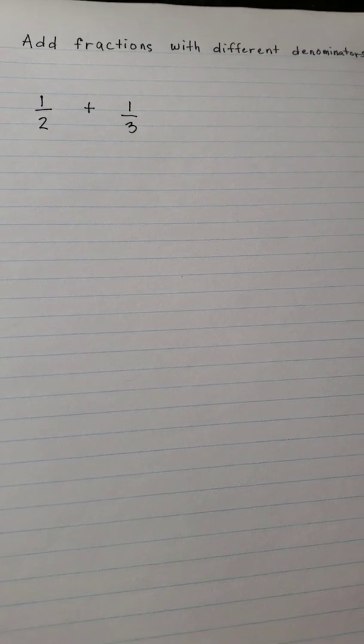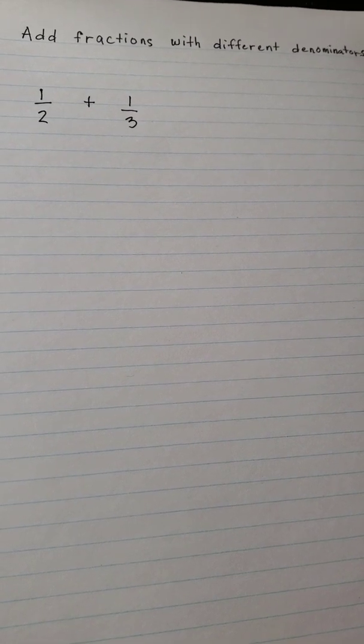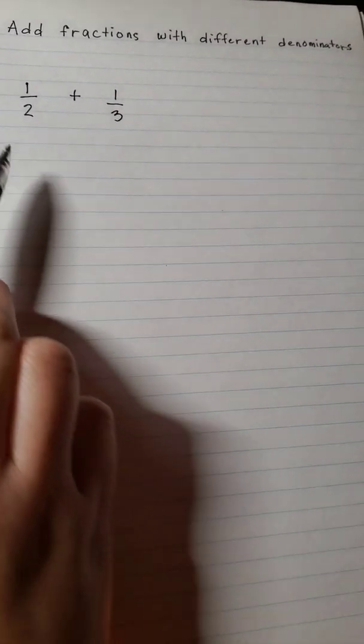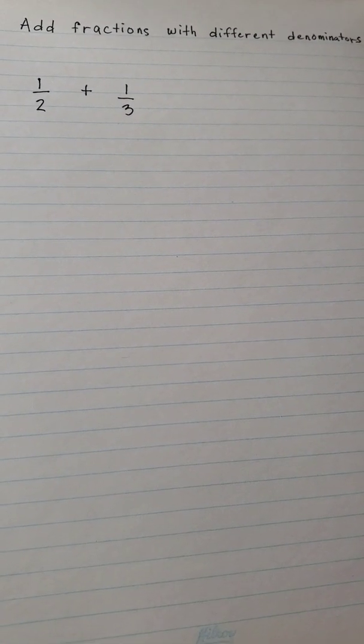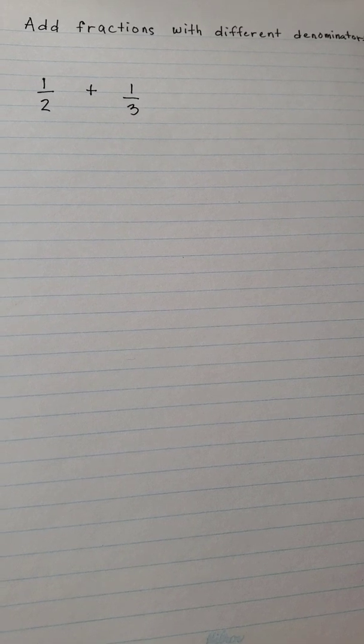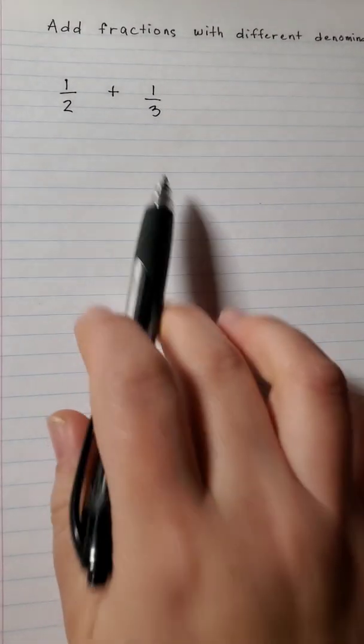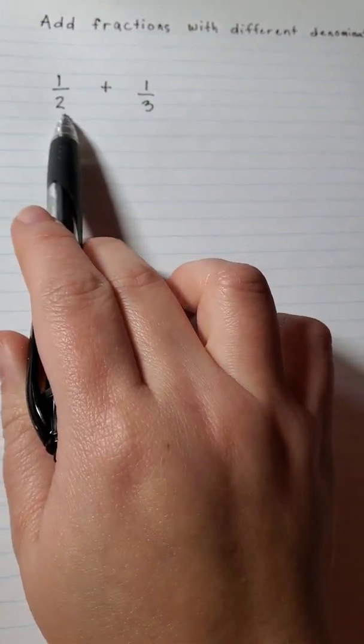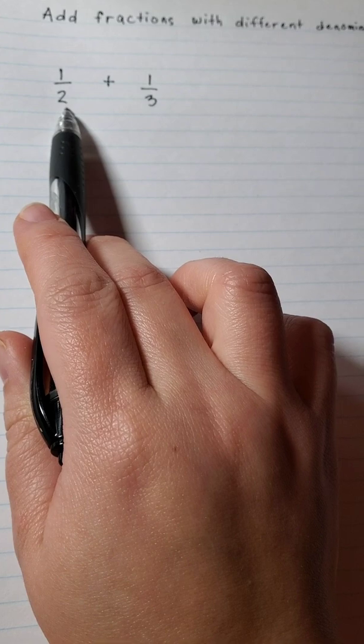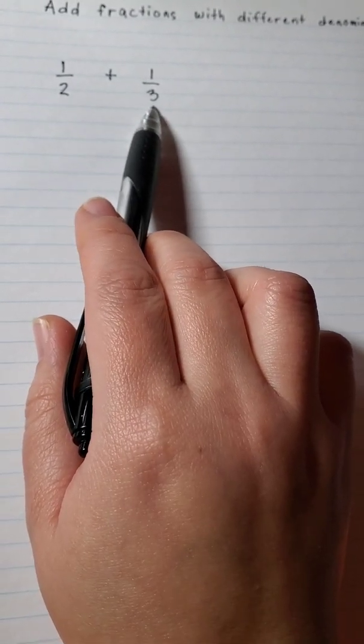We'll find a number that can divide both denominators. The key is, whatever is the highest denominator, you're gonna start counting from that number. So let's say 3. Can it divide the first denominator? No, 3 divided by 2 is not possible. Can you do 3 divided by 3? Yes. So it cannot divide both.